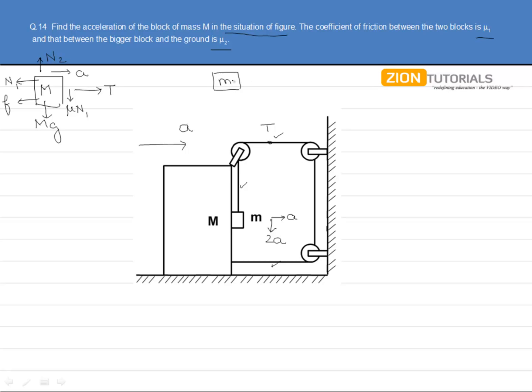The free body diagram of this block of mass small m has an mg force in the downward direction, an N1 force due to the bigger block that is the contact force, a 2mA pseudo force due to the 2A acceleration in the downward direction, a tension T in the upward direction, an mA force in the left due to the A acceleration in the right, and a frictional force of μ1 N1.